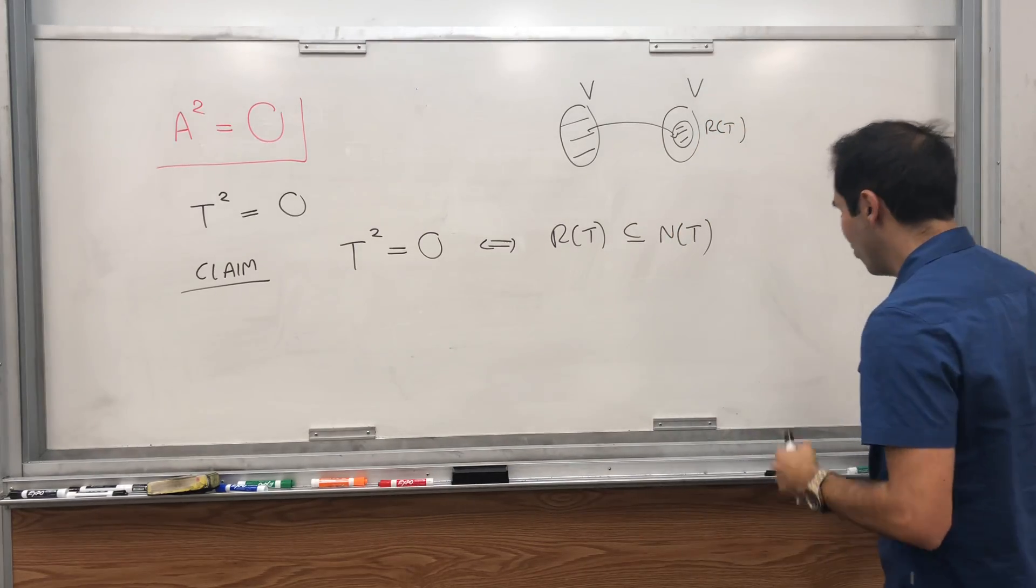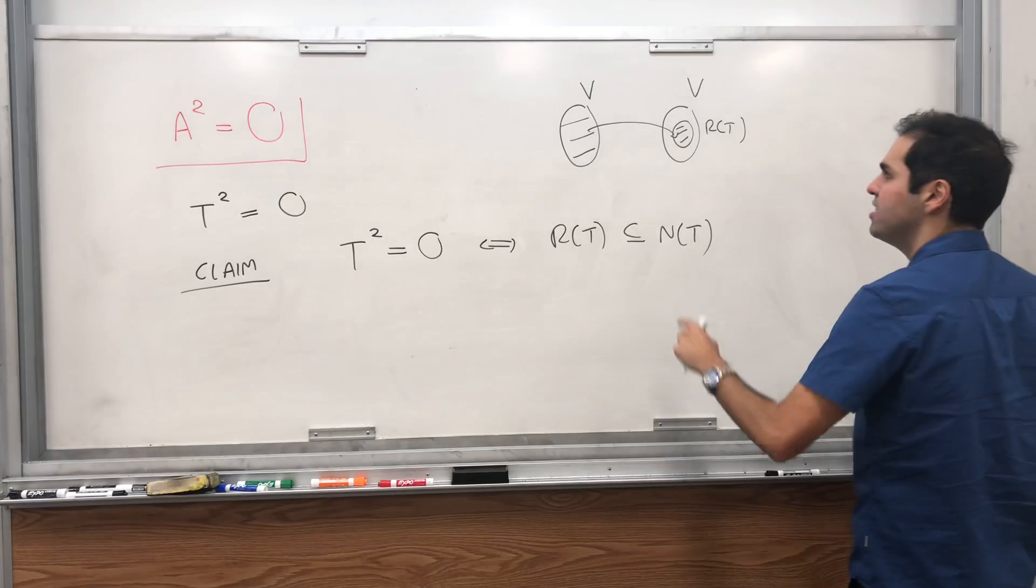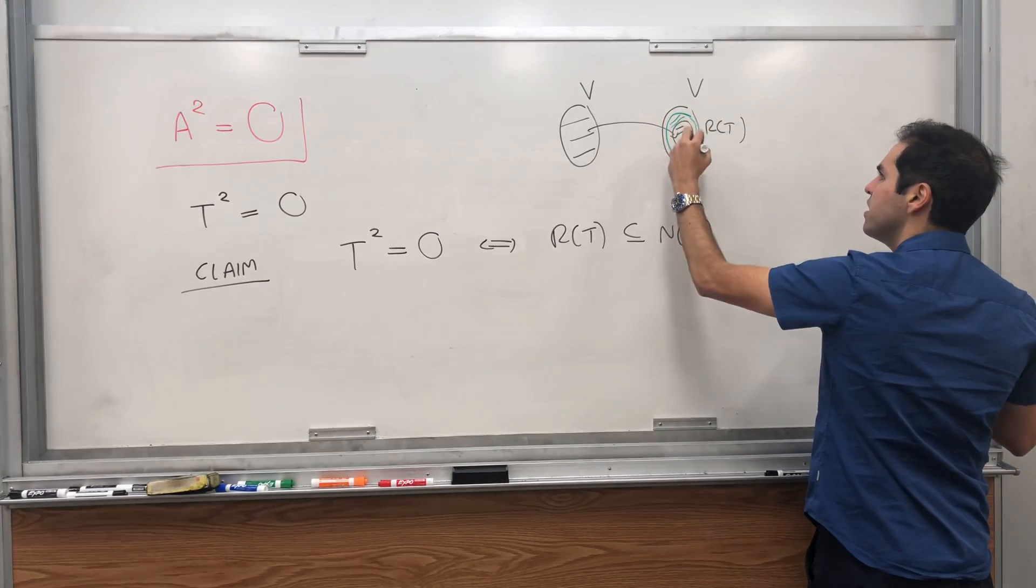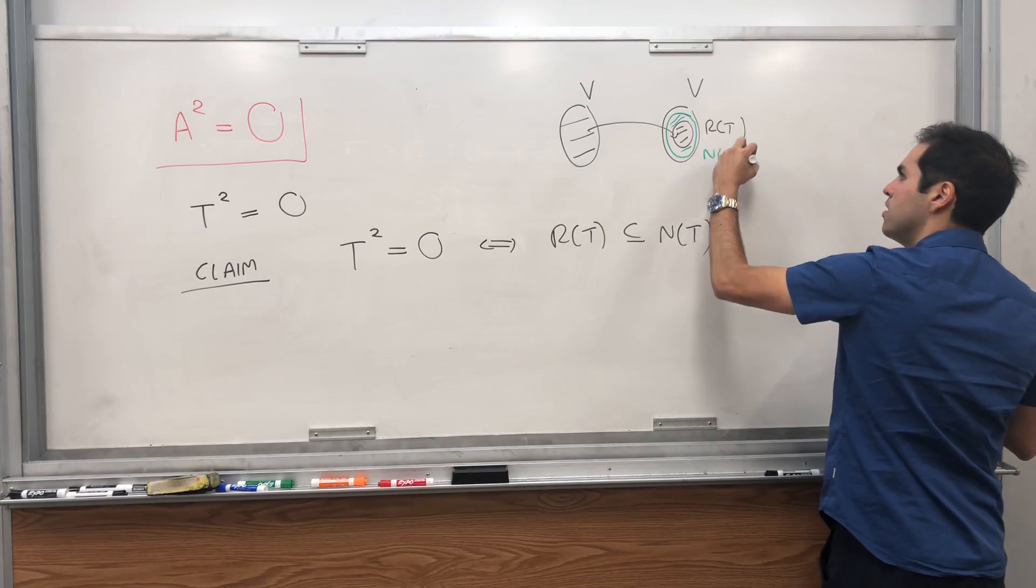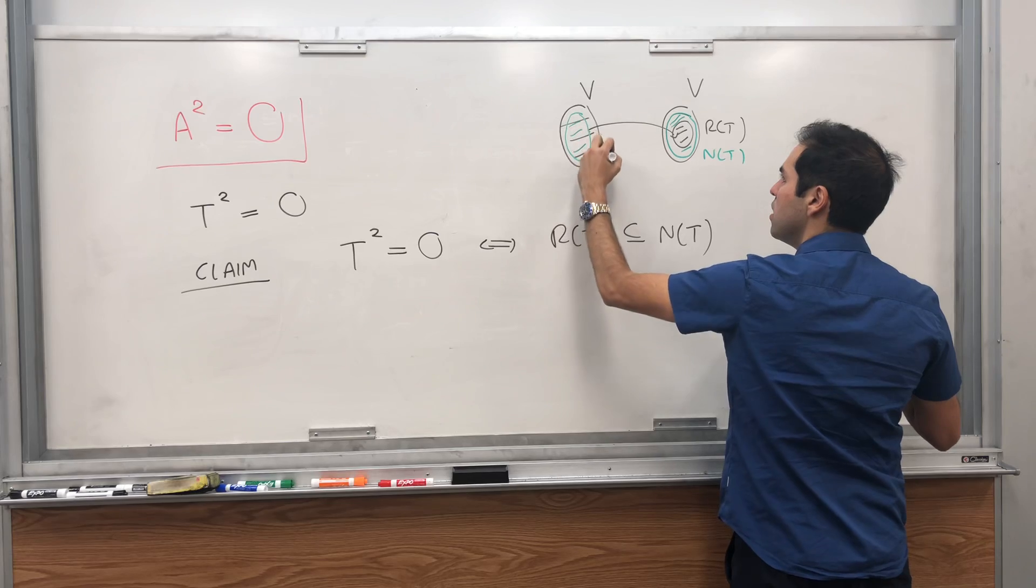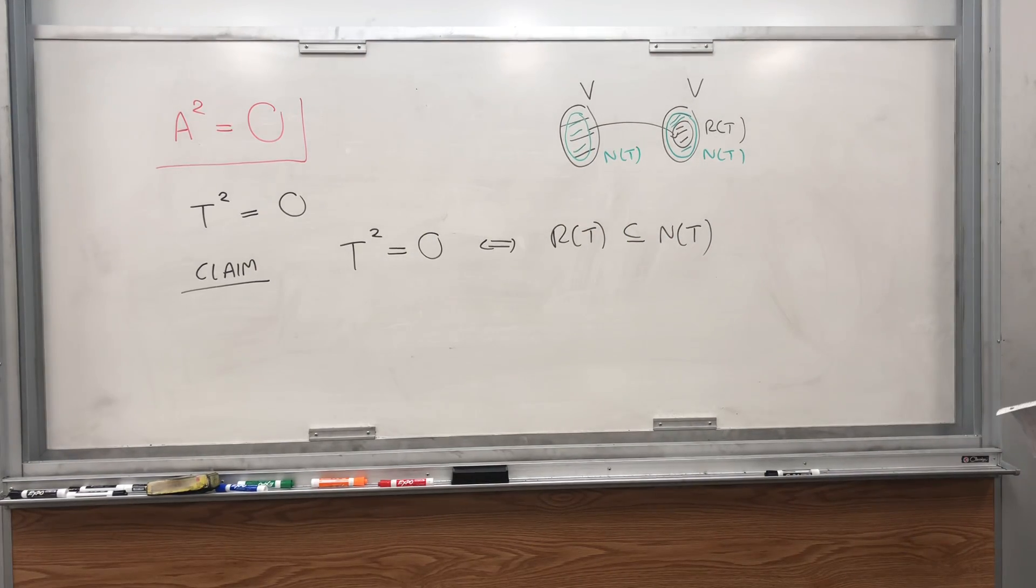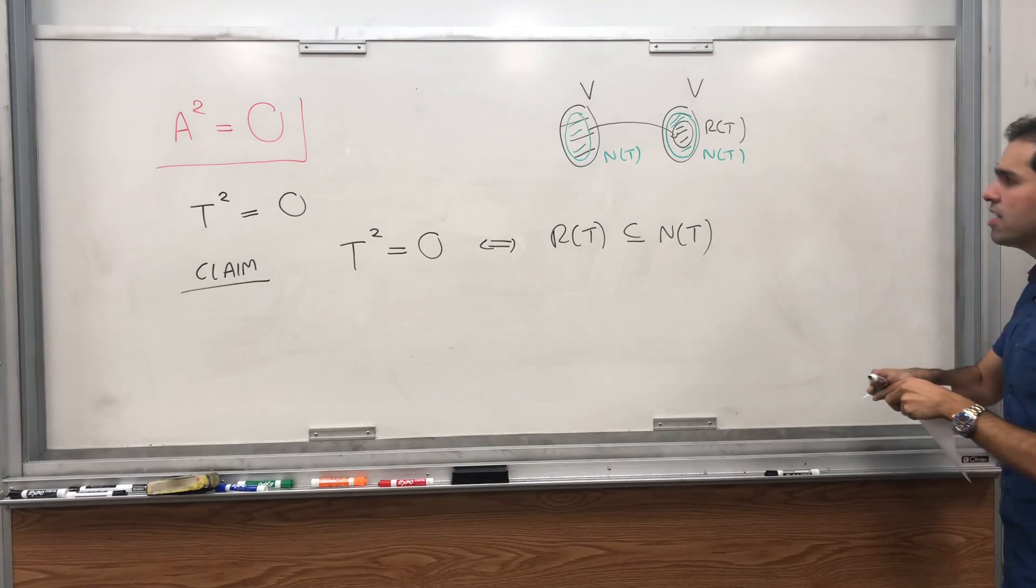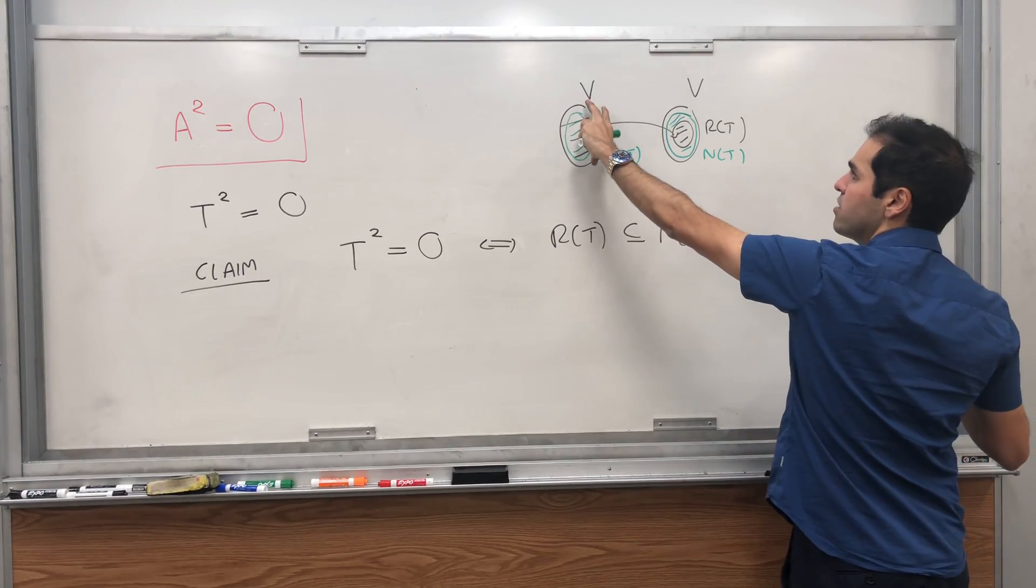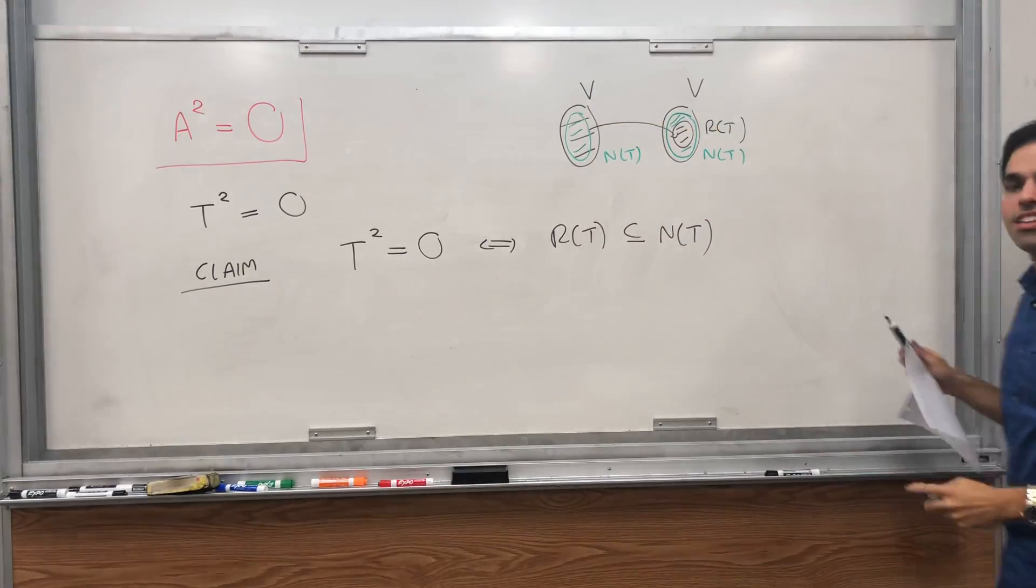And what this is saying is the only way T squared could be zero is if this range is included in the null space. So the null space is some space in V where all the vectors get sent to zero. And what this is saying is the only way T squared is zero is if it takes all the vectors in V and traps it inside the null space.